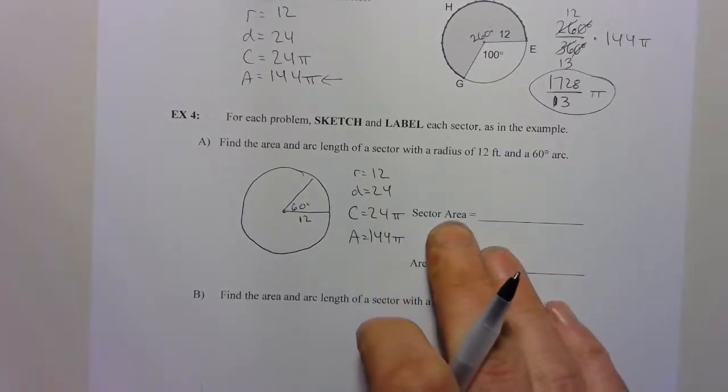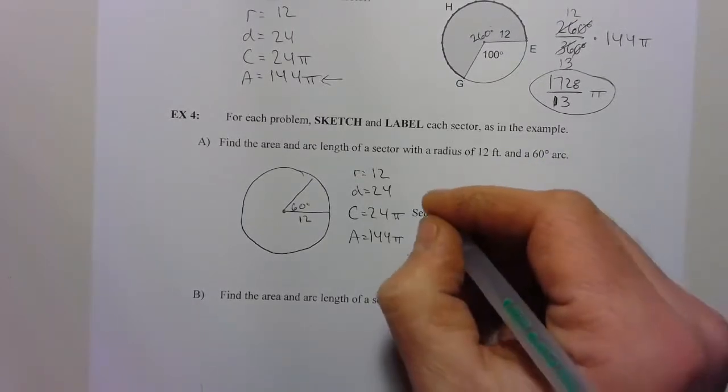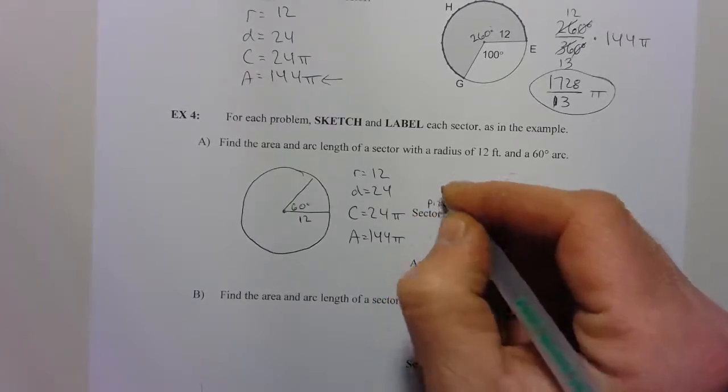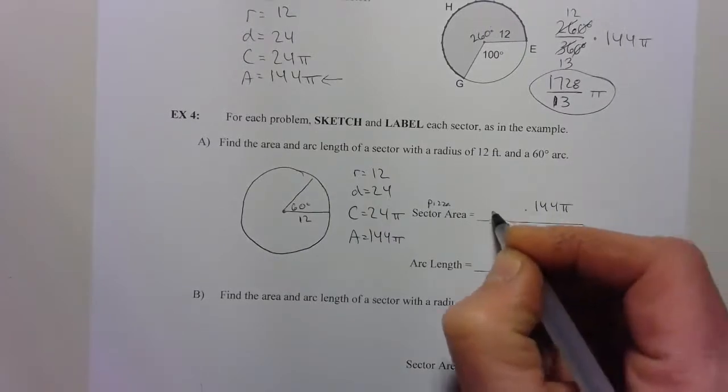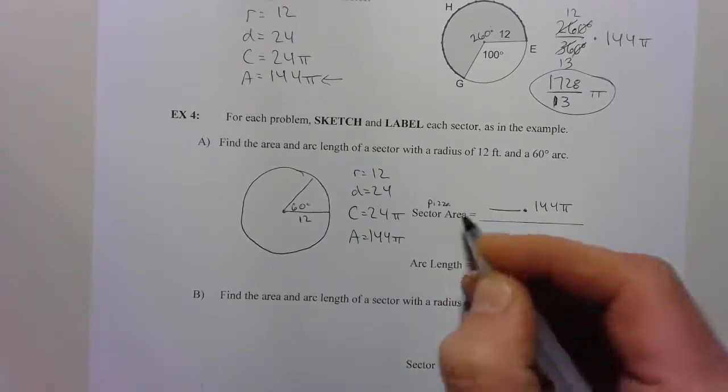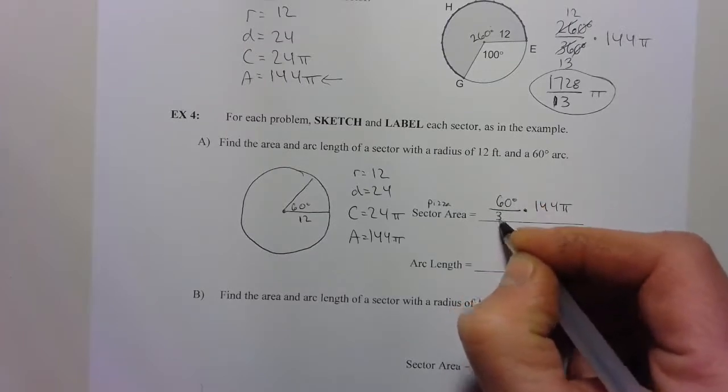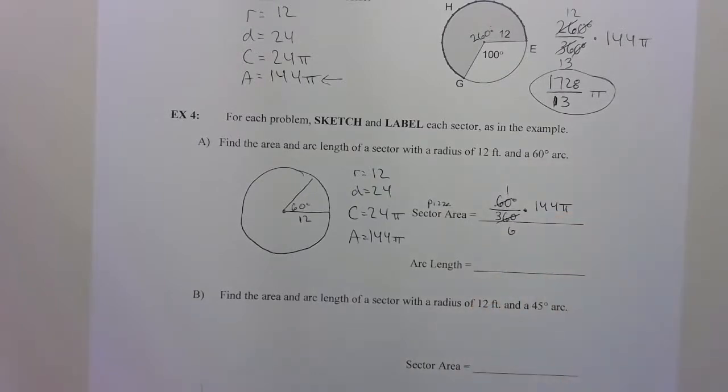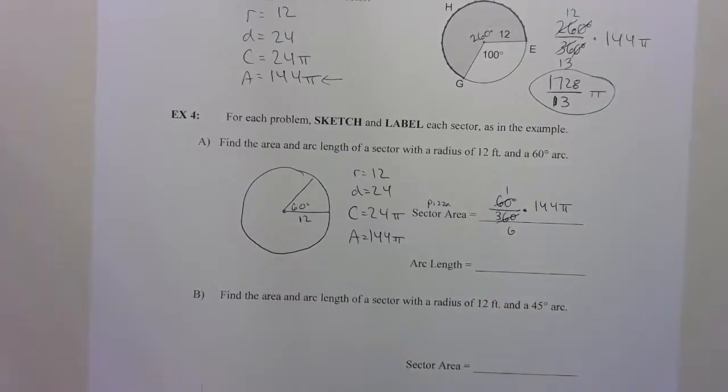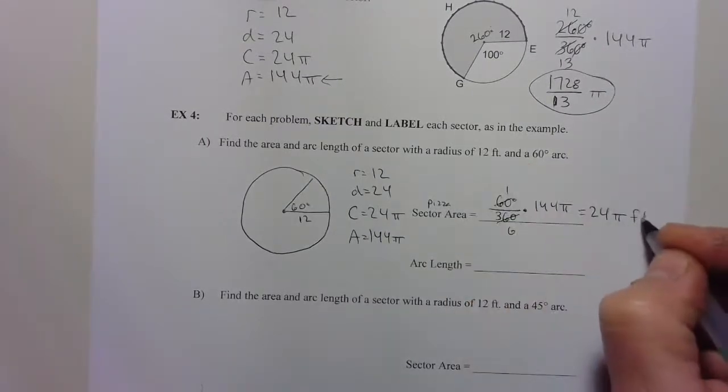If we're going to do the area of the sector, that's talking about the amount of pizza. Amount of pizza comes from the area. So I'm going to use 144 pi. How much of the pizza do I have? Well, I have 60 degrees out of 360. If I reduce that, that gives me 1 sixth. So I have 1 sixth of the pizza. 144 divided by 6 is 24 pi. This one had a label, so I have to add that in. 24 pi feet squared.